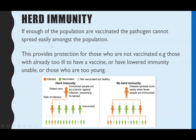That's why herd immunity is so important - to protect those who are too vulnerable to be vaccinated. Without herd immunity, if a large enough proportion of the population isn't already immune, when one person contracts the disease they can pass it on to non-immunized people, and it spreads easily. Whereas with herd immunity, most people are already immunized, so even if one person contracts it, it won't spread very far and should protect most of the population.